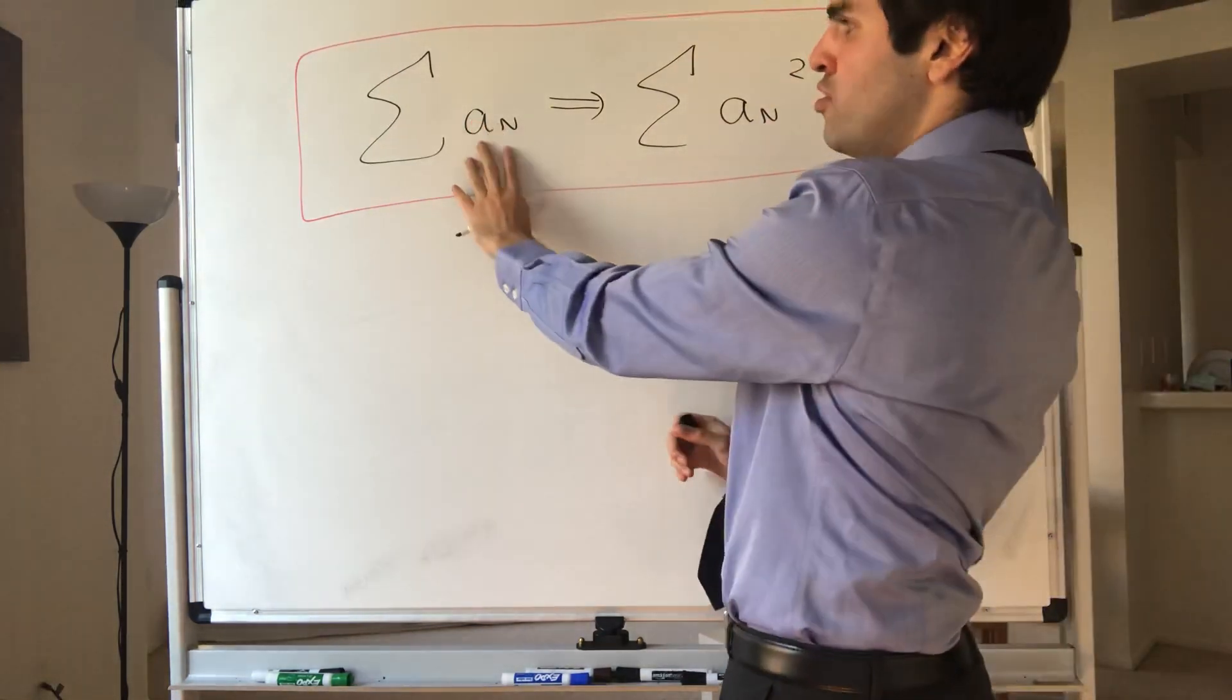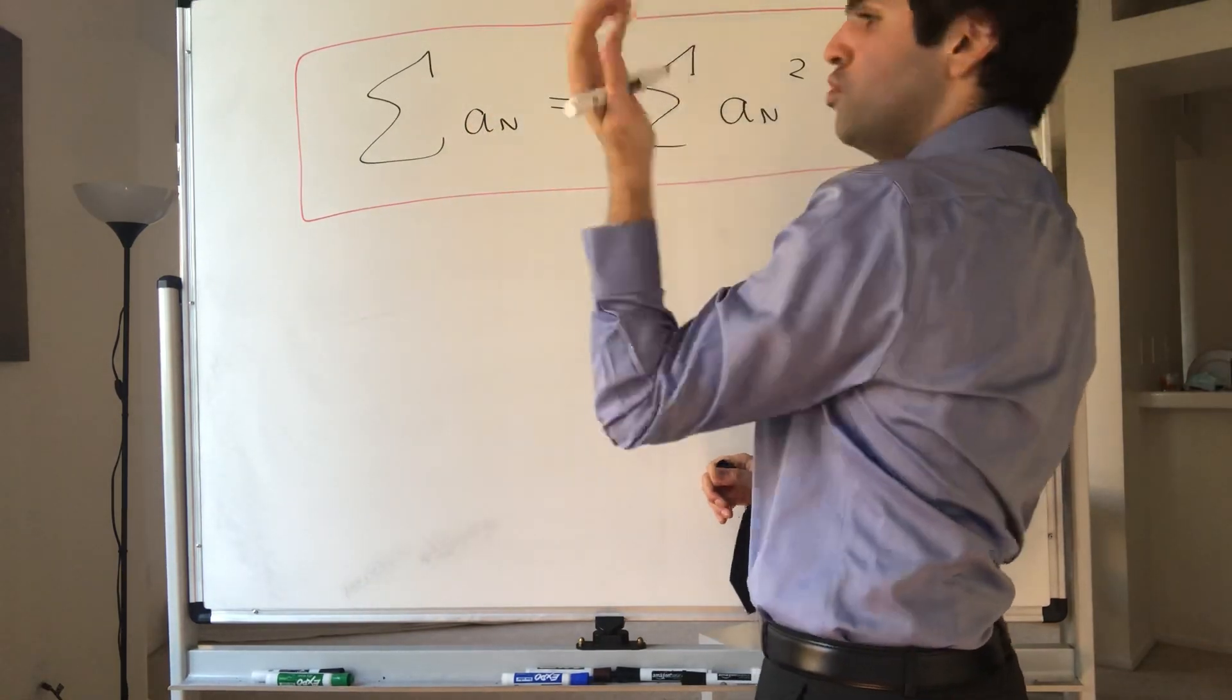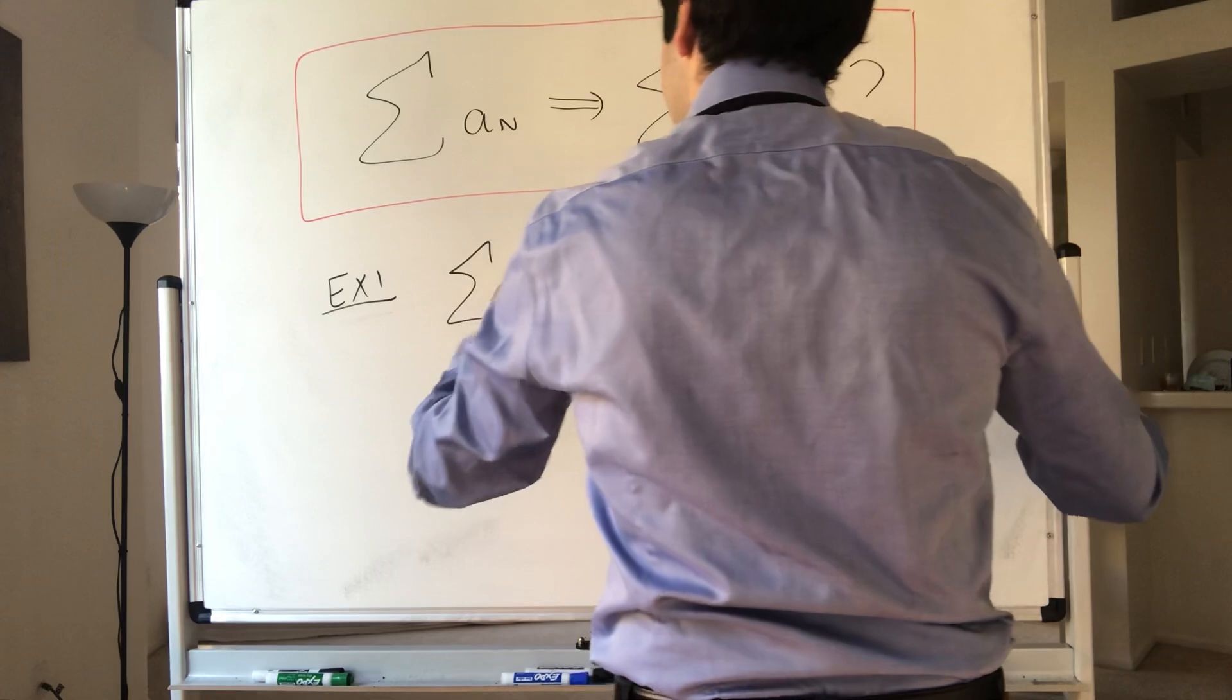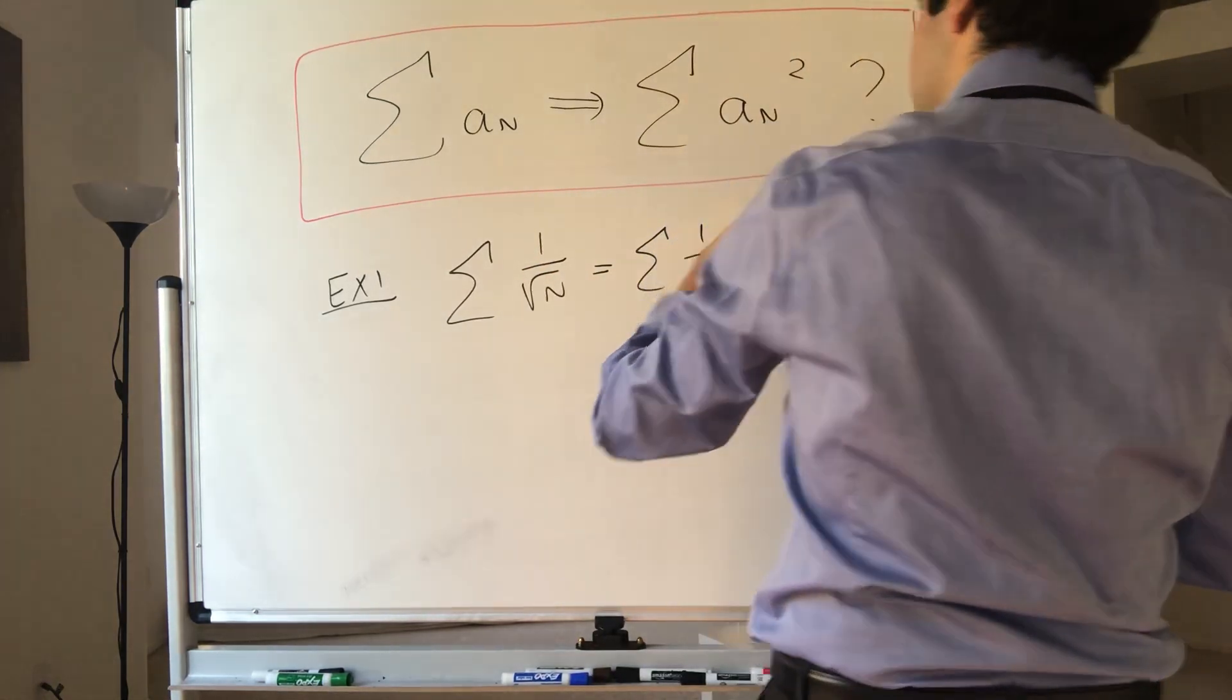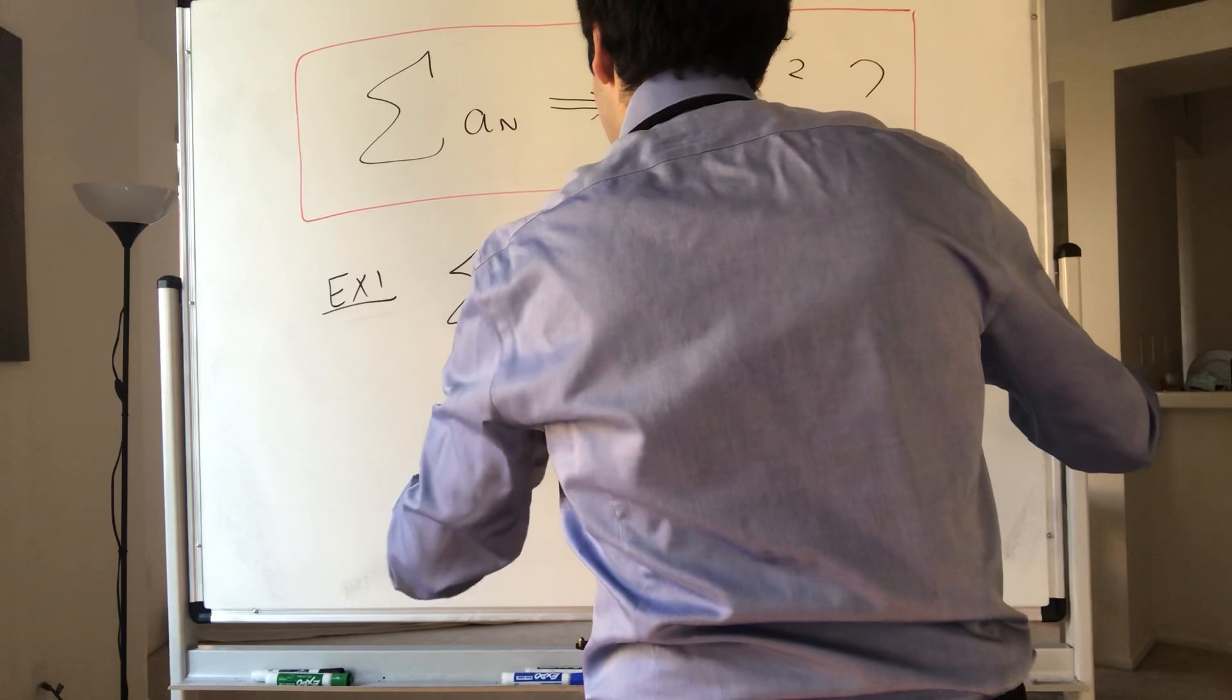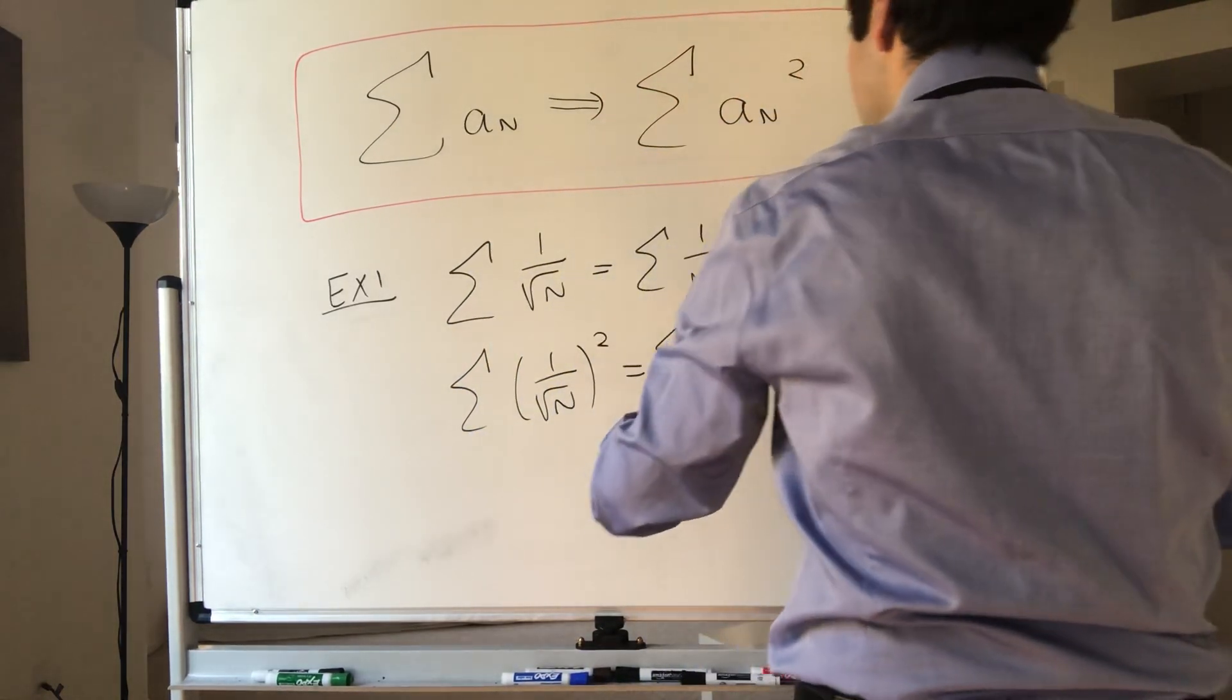In fact, let me first give you an example of a divergent series whose square diverges. For instance, the series of one over square root of n, which is just a one-half series, that diverges because one-half is less than one, but also the square, one over square root of n squared, which is the one series, also diverges.